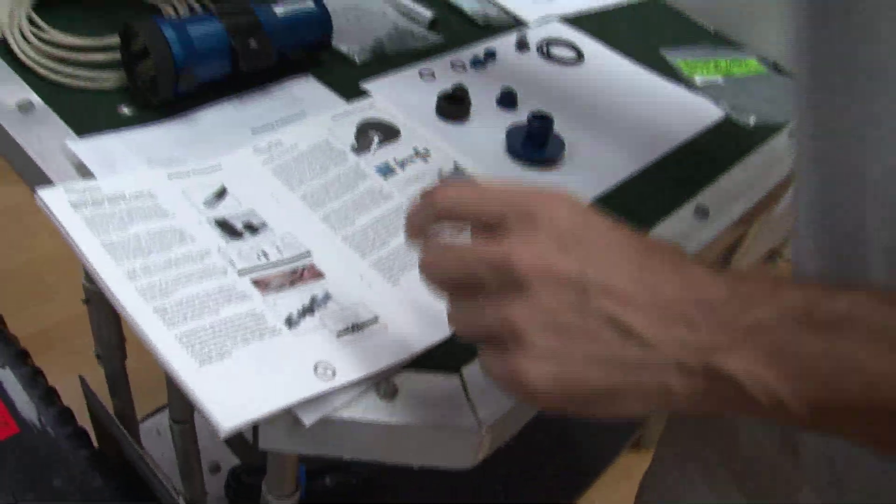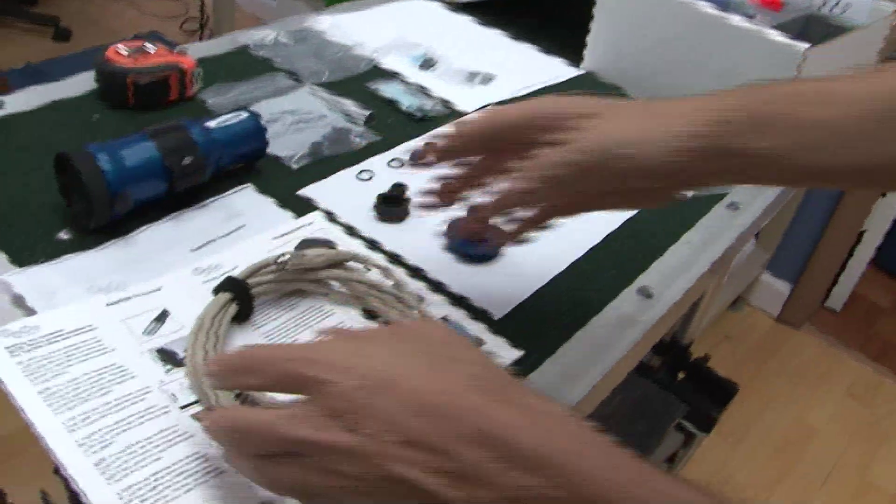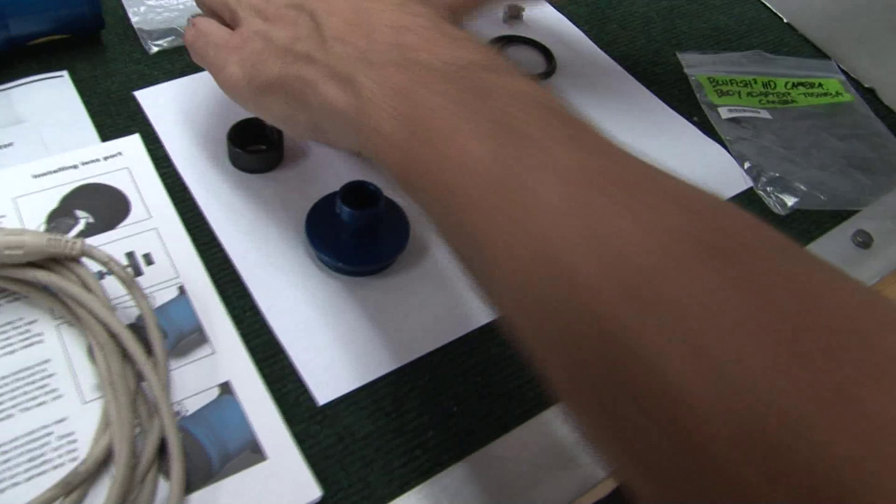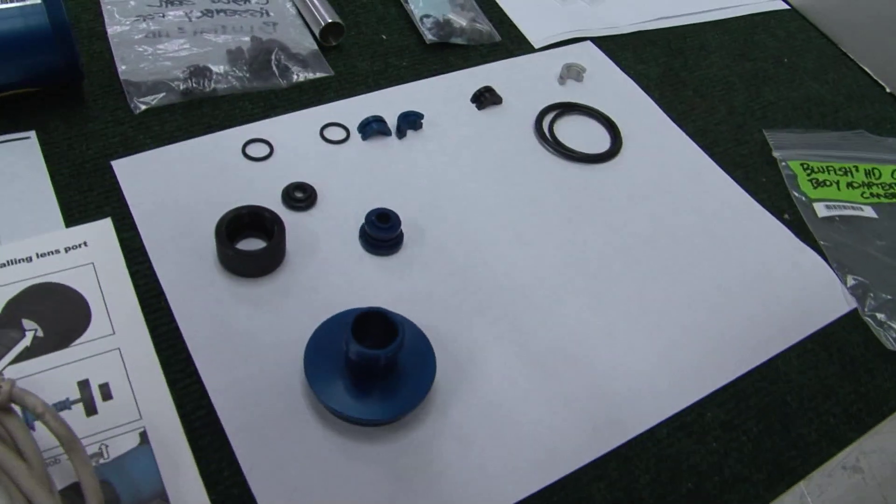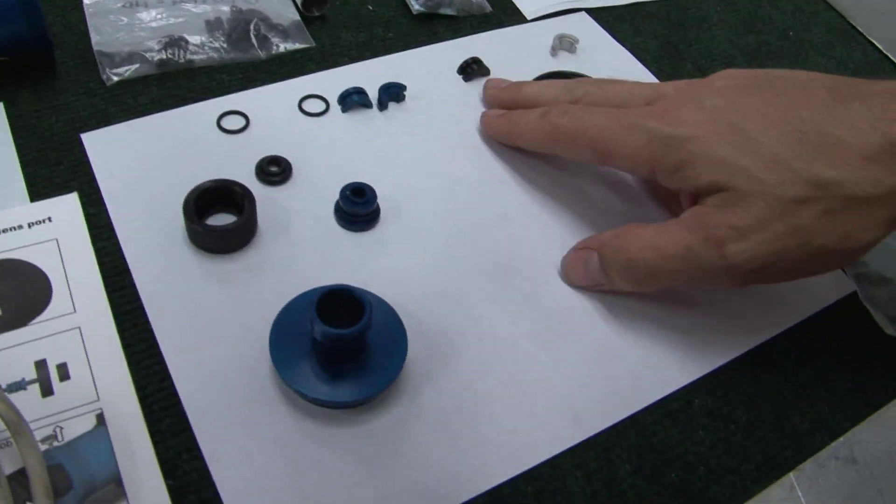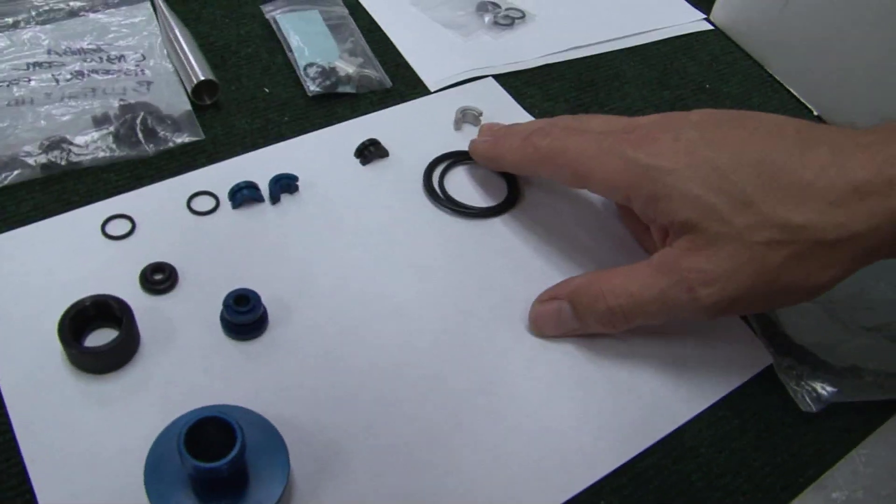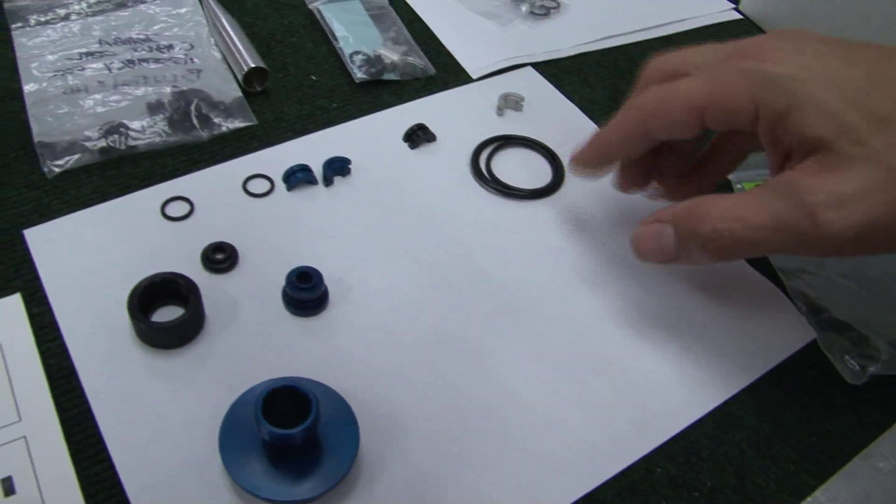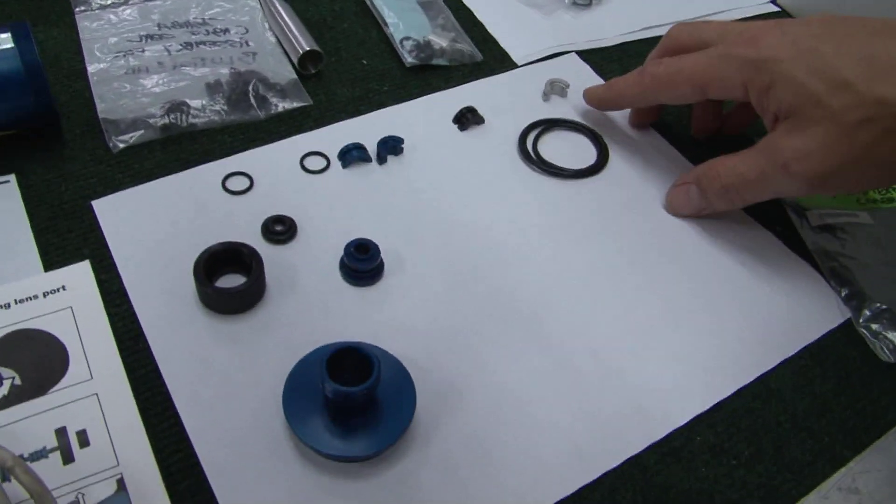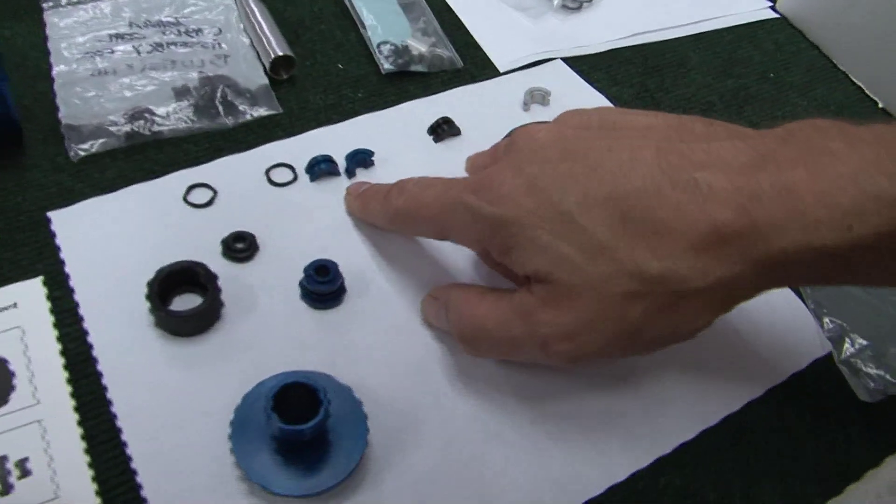We're going to start off with showing you a cable and there's three different fittings that fit into the Bluefish housing. We have a blue, we have a black, and we have a silver. There's three different sizes. The silver is for the Kionics head, the blue and the black are for the Toshiba.